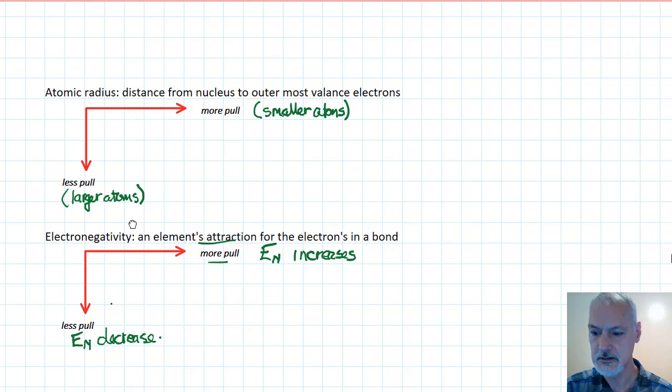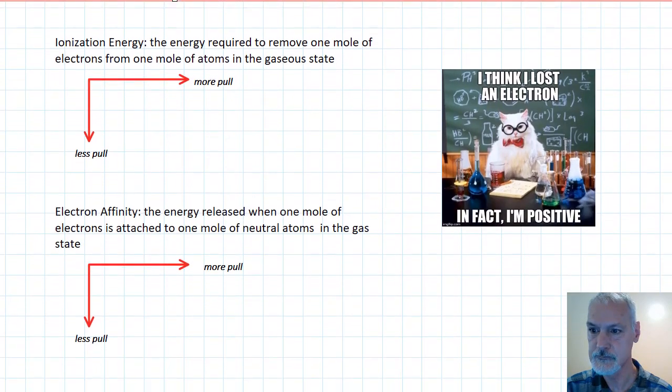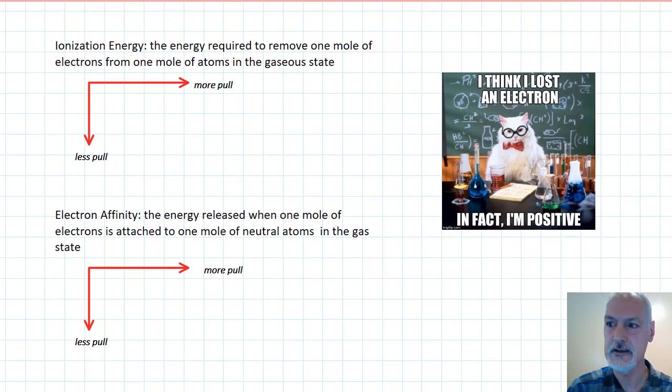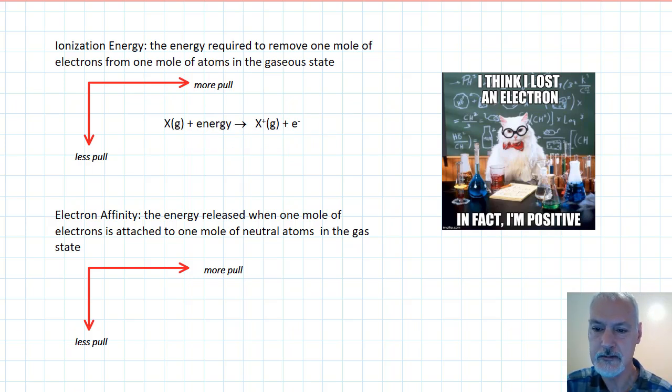Now we'll look at the last two trends. Ionization energy, the energy required to remove one mole of electrons from a substance in the gaseous state. If we were to write it out as an equation, it would look something like this. So we have to put energy in to rip off that electron. Well, if a substance has more pull, it's going to hold on to that electron tighter. So more pull is going to result in higher ionization energies. It's going to take more effort to rip that electron away. As we go down the periodic table with less pull, we expect a weaker attraction for that electron, and we're going to take less energy to remove it.